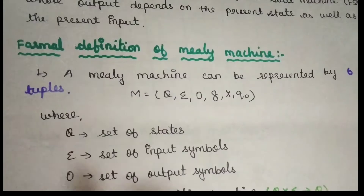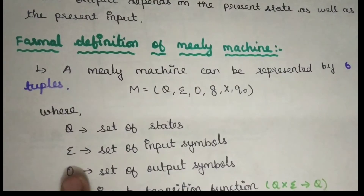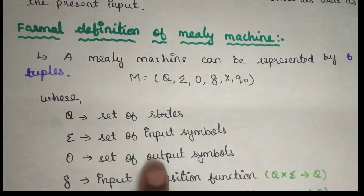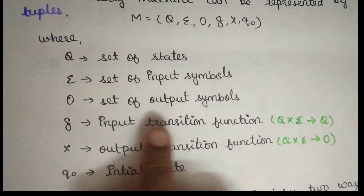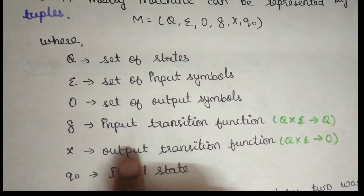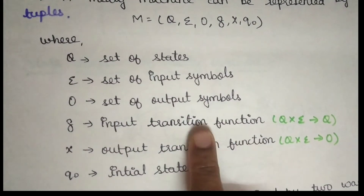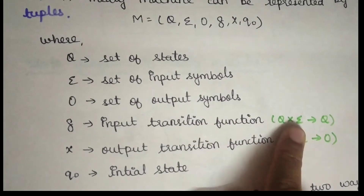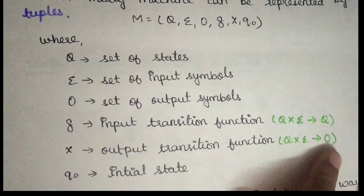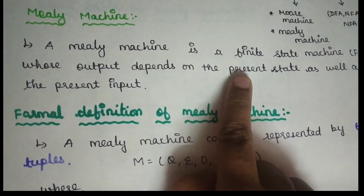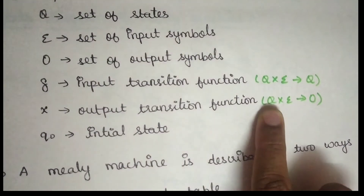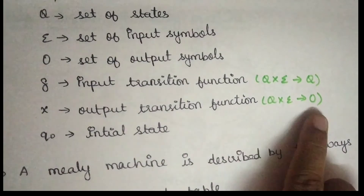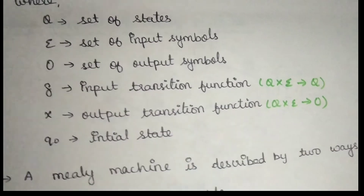Q naught is the initial state. Q is the set of states. Sigma is the set of input symbols. O is the set of output symbols. The transition function X is the output transition function — given one state and one input, it goes to another state. The output depends on both the present state and present input, which is why this is called a Mealy machine.